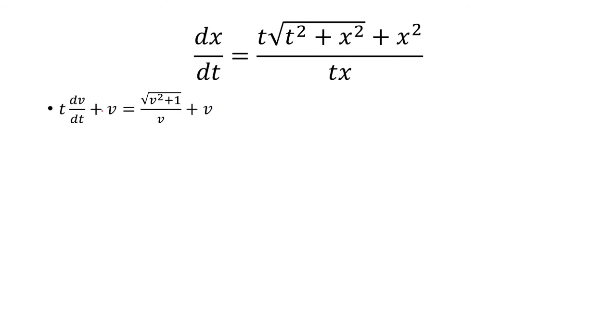Now, I have v on both sides. Those are going to go away. So then it's t times dv over dt is equal to square root of v squared plus 1 over v.